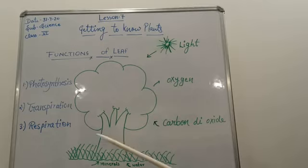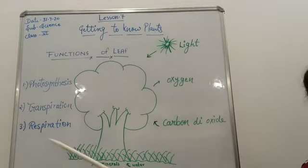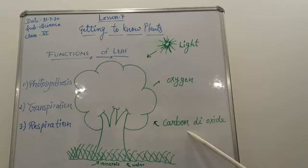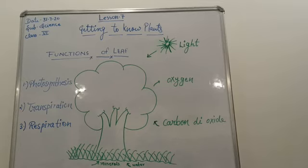Number three: respiration, or as we can say, exchange of gases. Leaves help in the exchange of oxygen and carbon dioxide through tiny pores called stomata present on their surface. This process of exchange of gases is known as respiration.